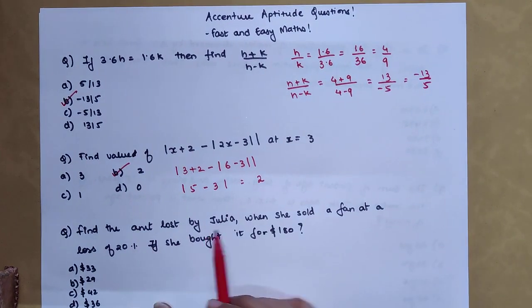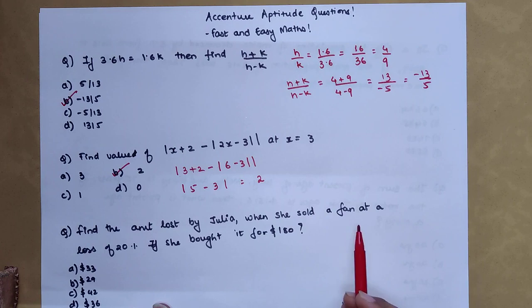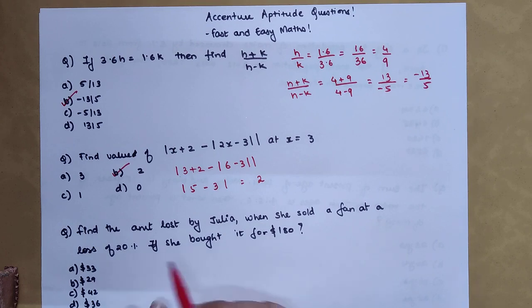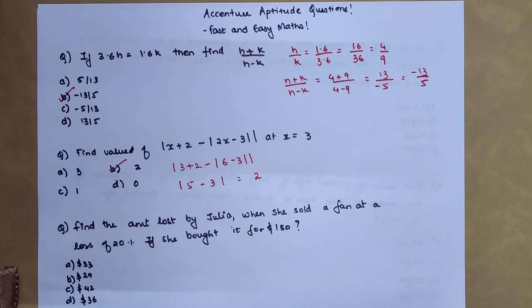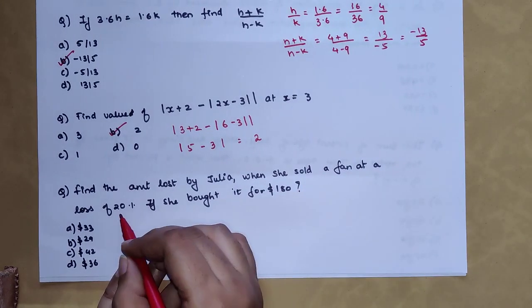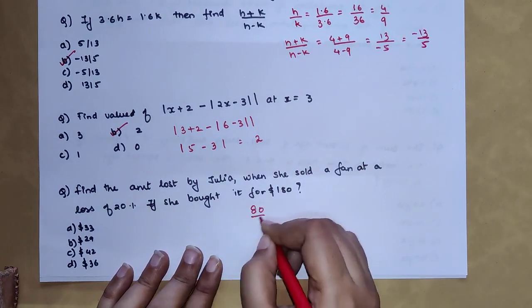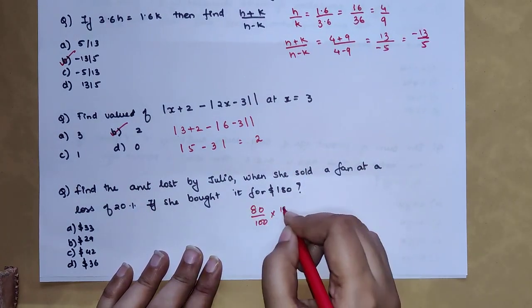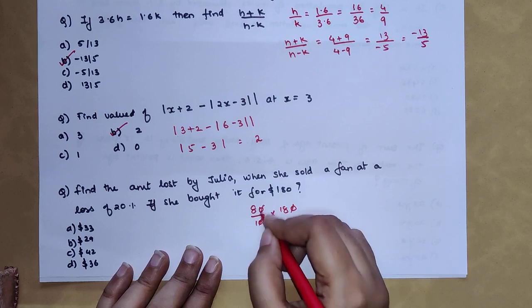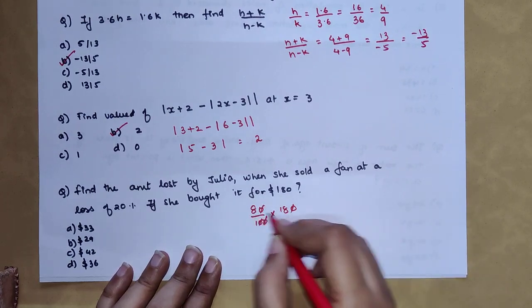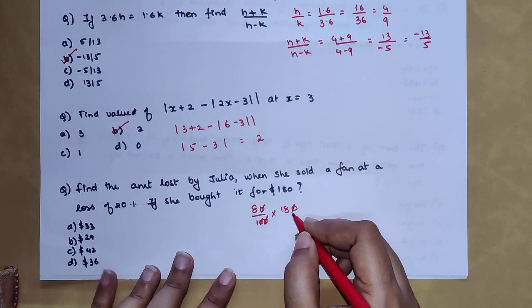Now the next one: Find the amount lost by Julia when she sold a fan at a loss of 20 percent if she bought it for 180. Please understand what you could have done is you could have taken 20 percent of 180 and then whatever answer you get, you subtract it from 180. But simply, since there is a loss, you subtract 20 percent from 100, so you get 80 percent of 180, and that will directly get your answer. You don't have to subtract or anything. So when you multiply 8 into 18 you get 6.